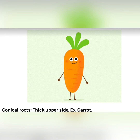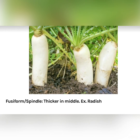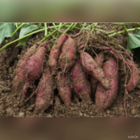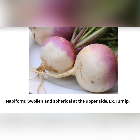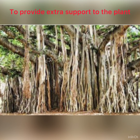In tap roots, there are different types of modifications. First, storage: in certain plants, roots become fleshy, thick, and spongy to store food prepared by the leaves. For example, in carrot, turnip, radish, and sweet potato, the roots become swollen and fleshy to store food.